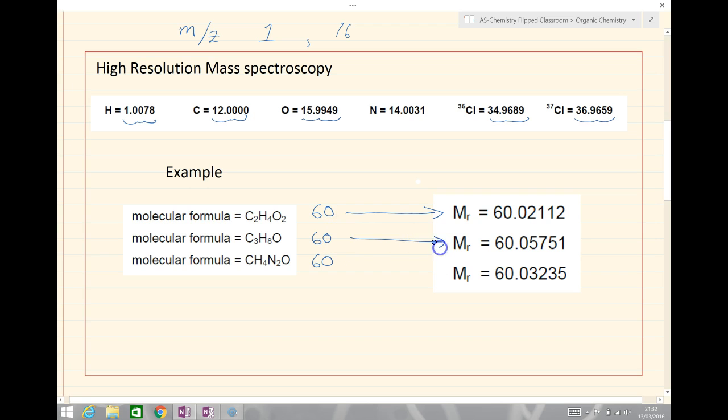An MR of 60.05751, and an MR of 60.03235. This gives us a way of distinguishing between individual molecules.